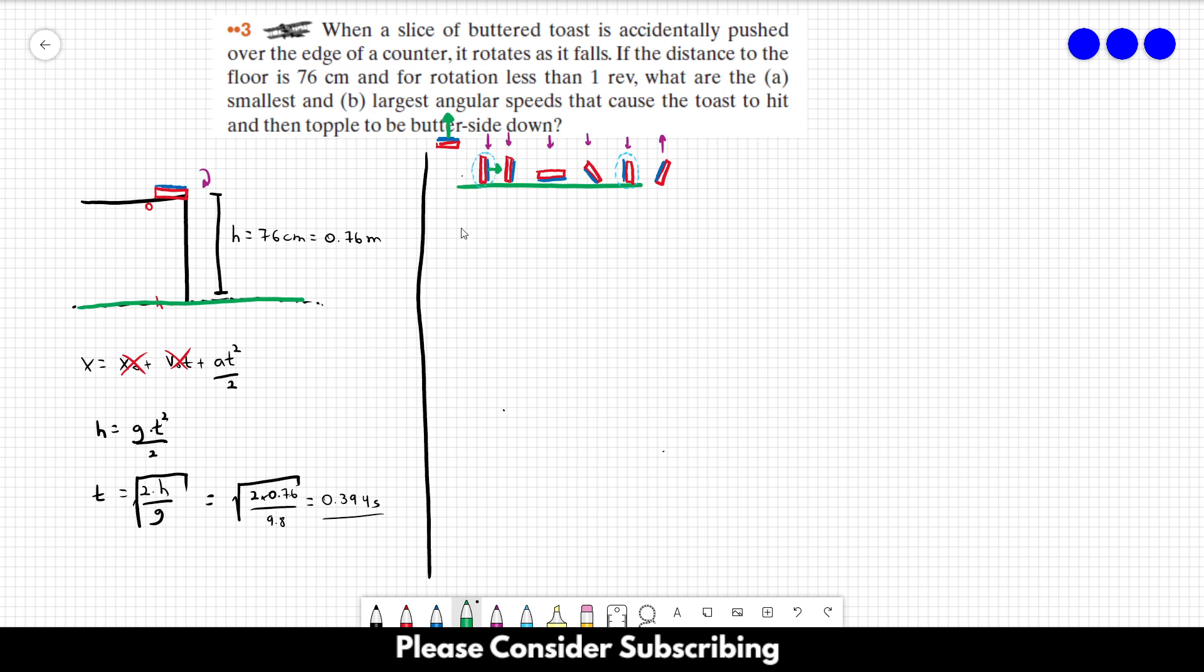As you can see, initially it's pointing upwards and at this point it's pointing to the right. So this over here is 90 degrees. So the smallest angular speed that we can have is the one that leads to 90 degrees of rotation.